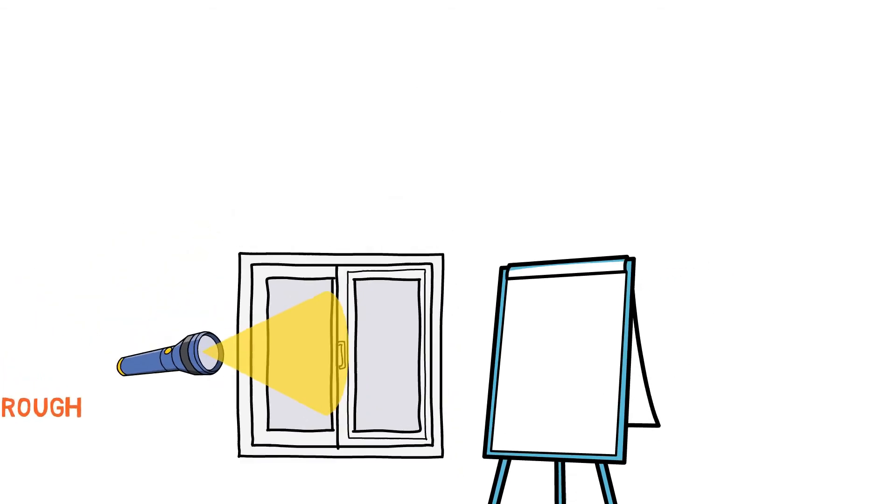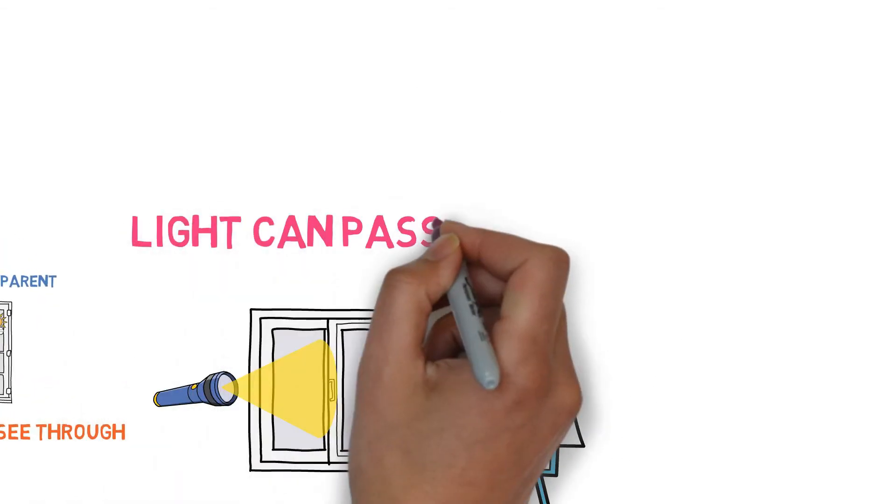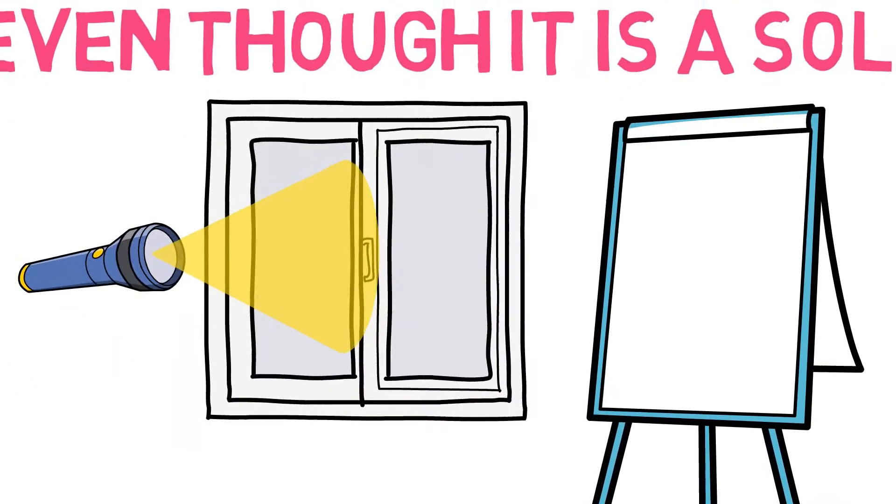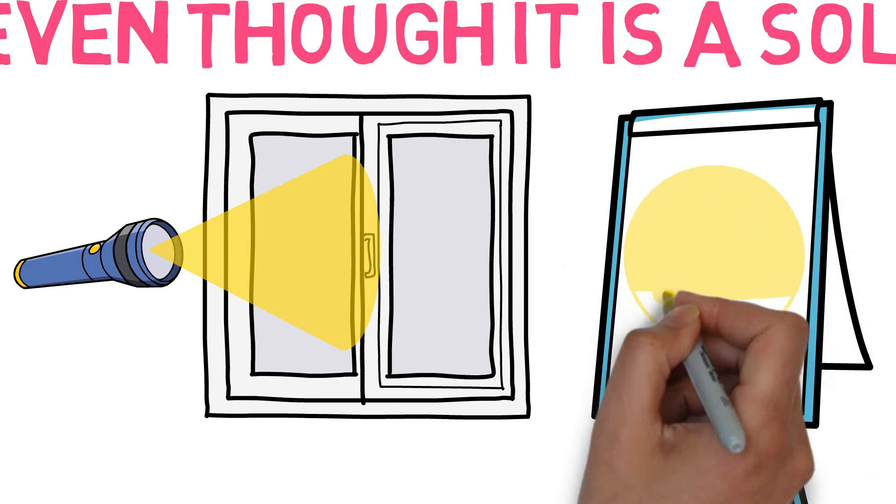When the light hits the glass, it is not blocked by it even though glass is a solid, but passes right through it and casts itself onto the canvas.